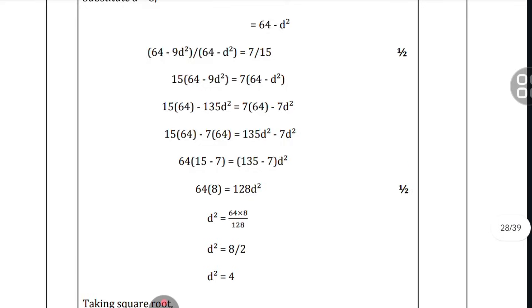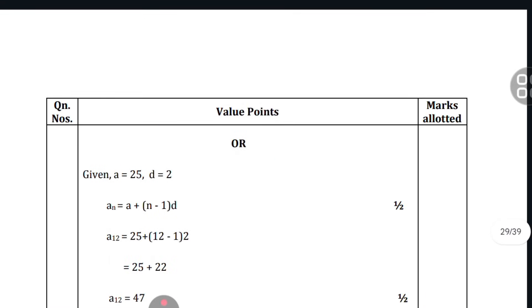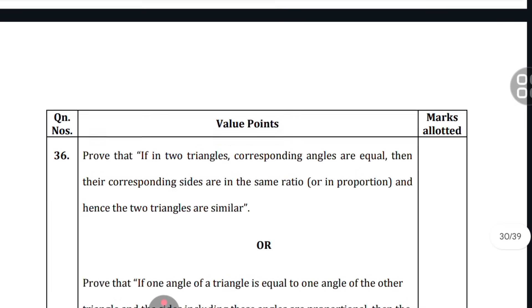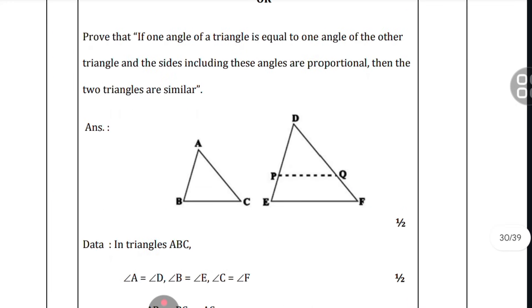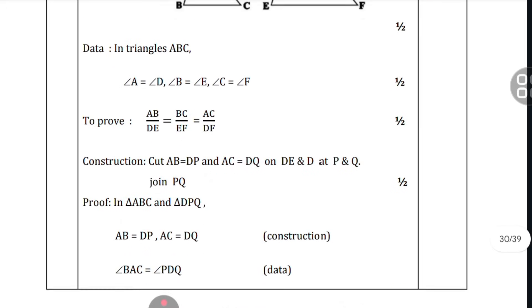There will be totally 2 marks for two tables, and for drawing the points 1 mark, and writing the x and y values which intersect there you will get 1 mark - totally 4 marks you will get. Practice all these arithmetic problems by seeing my solving, how systematically I have solved. In that manner only you have to solve for this arithmetic chapter.